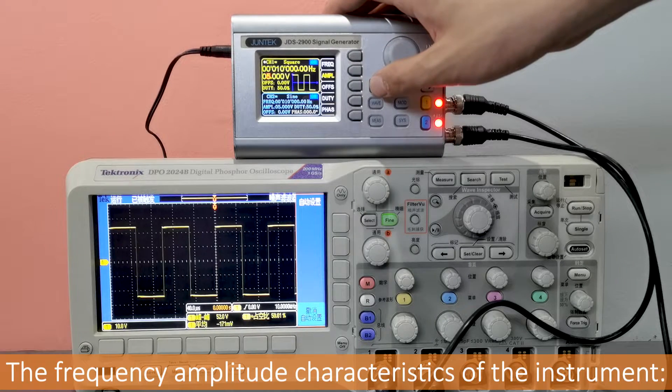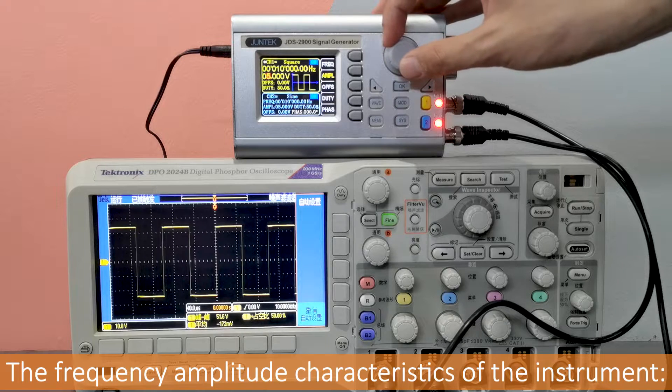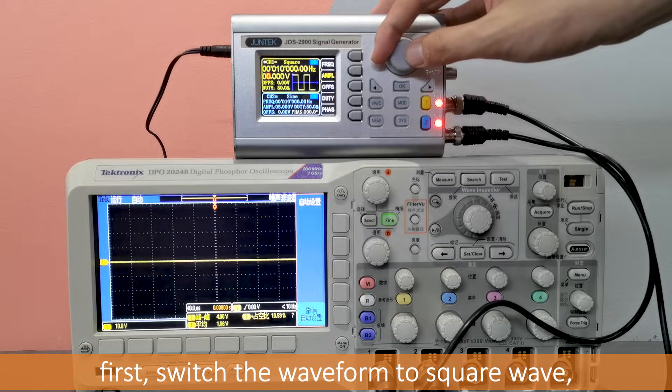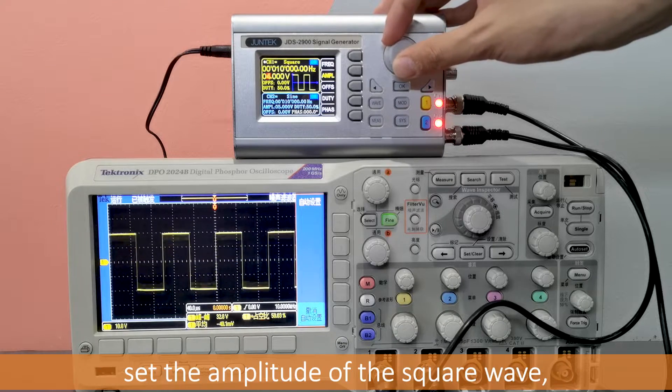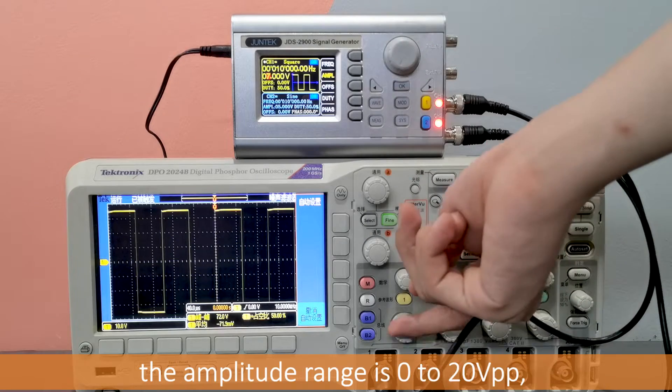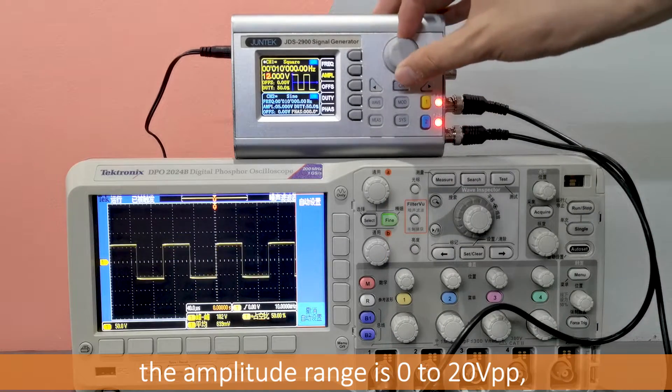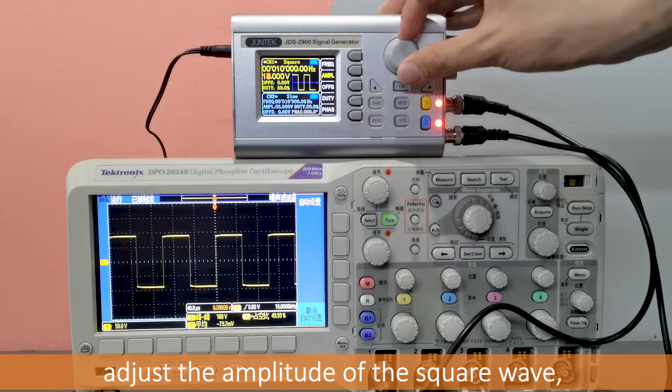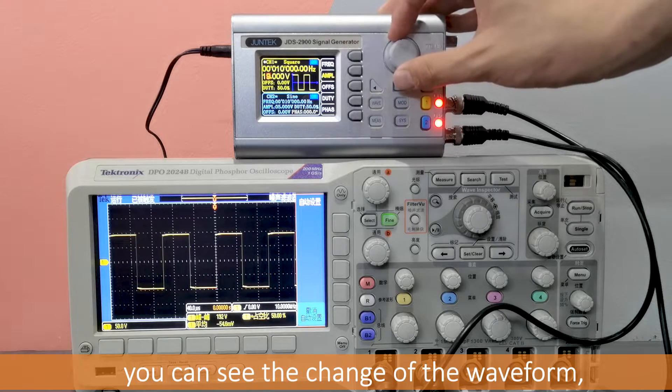The frequency amplitude characteristic. First, switch the waveform to square wave, set the amplitude of the square wave. The amplitude range is 0 to 20 VPP. Adjust the amplitude of the square wave, you can see the change of the waveform.